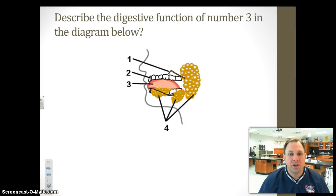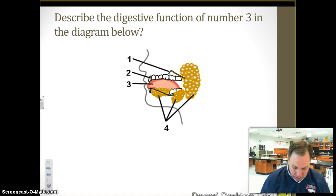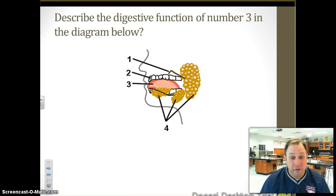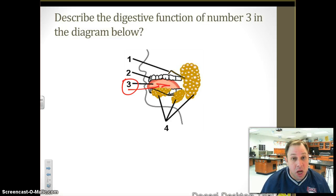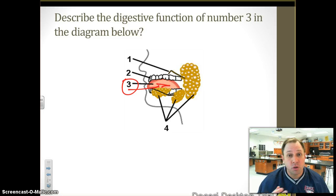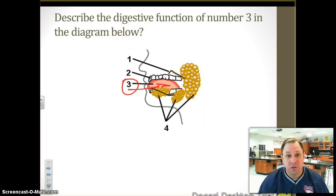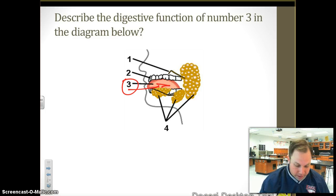Describe a digestive function of number three in the diagram. Here I have a picture of the mouth, and number three is pointing to the tongue. The tongue is responsible for moving food around in the mouth, helping the teeth grind up and smash up that food. So it aids and helps out the teeth in the physical digestion process.